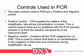Controls used in PCR: there are two main controls. They are a positive and negative control. A positive control is DNA supplied by makers of the amplification kits whose concentration is known. This is used to ensure there are no problems with the PCR process, whether from the reaction components or the instrument itself. A negative control contains all the PCR reagents but no DNA. This is used to ensure that there is no contamination in the reagents or that none was introduced during amplification setup.